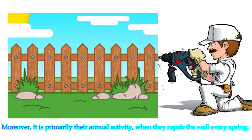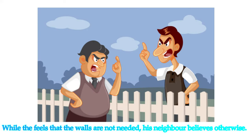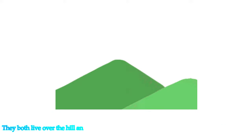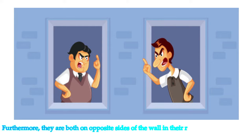It is primarily their annual activity when they repair the wall every spring. The two neighbors have opposing views. While the poet feels that the walls are not needed, his neighbor believes otherwise. They both live over the hill and walk along the wall together repairing gaps along the way. They are both on opposite sides of the wall in their respective boundaries.